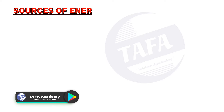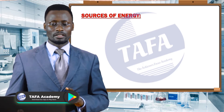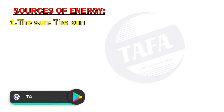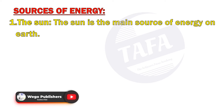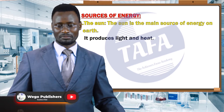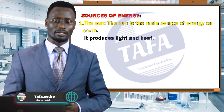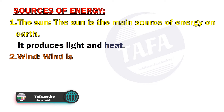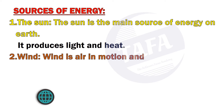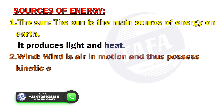What are the various sources of energy? The Sun is the main source of energy on Earth — it produces heat and light. Another source of energy is wind. Wind is air in motion and thus it possesses kinetic energy.